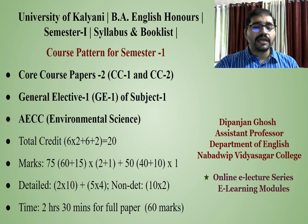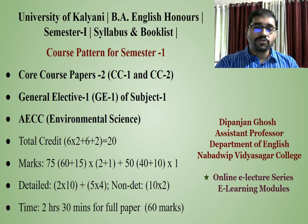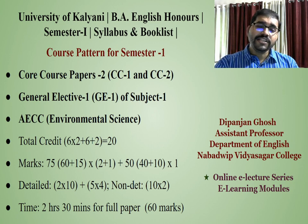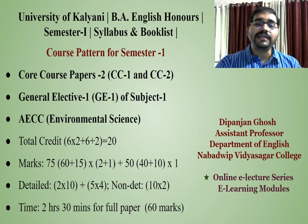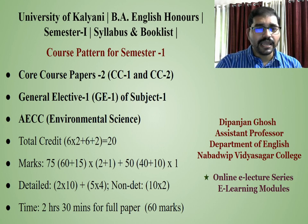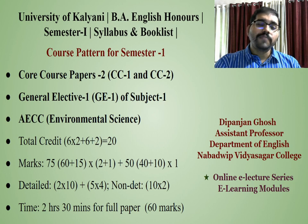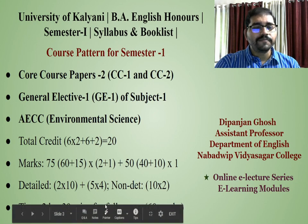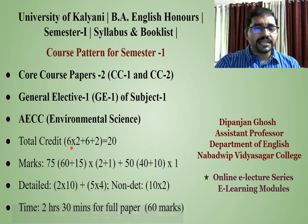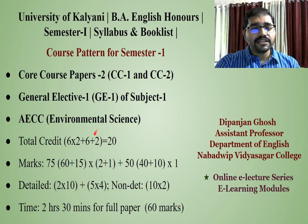Now, the total credits — that means in the core course paper, that is the Honours paper — as you can see, there are two papers: CC1 and CC2. Each paper consists of six credits, meaning in a particular week you will get six classes for one particular paper. The total credit number is 20, divided into major sections: six into two indicates the core course papers, then six indicates the general elective section, and two credits for environmental science — that is the AECC section.